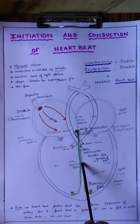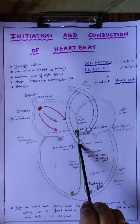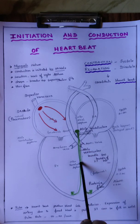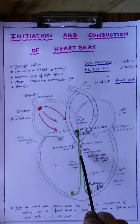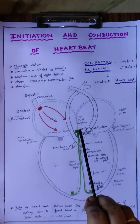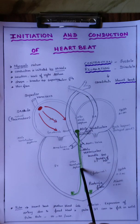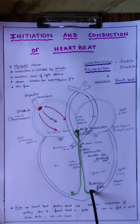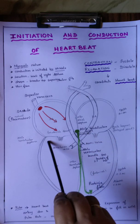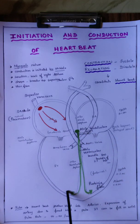This is the atrio-ventricular bundle, otherwise known as the bundle of His. His was the scientist who discovered this bundle, so it is named after him. The impulses are carried through the atrio-ventricular bundle and then to the left as well as right ventricle through the Purkinje fibers. That is how the impulses are carried all over the ventricle, making the ventricle contract.